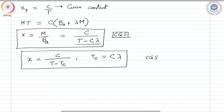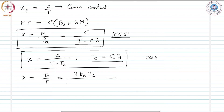We may determine the value of the mean field constant lambda by looking at our expressions. Lambda is given as T_C over C, which works out to 3 k_B T_C divided by the quantity N g² S(S+1) mu_B².